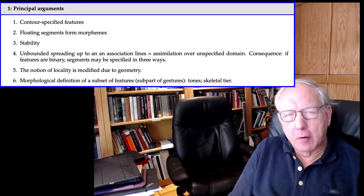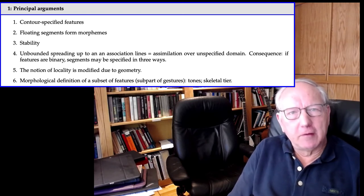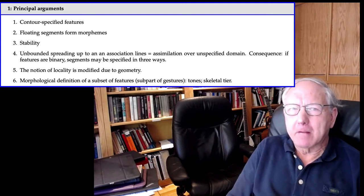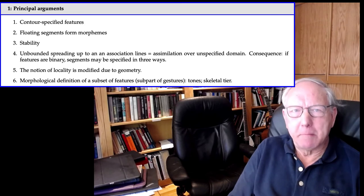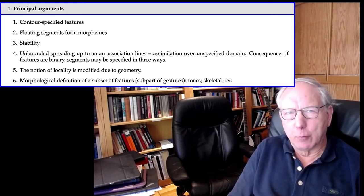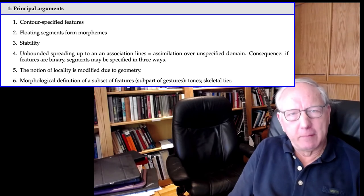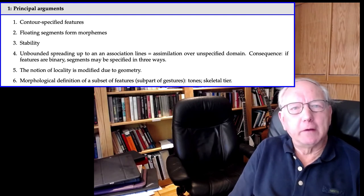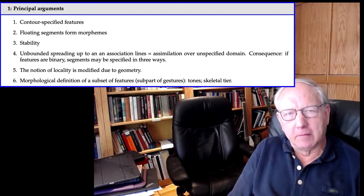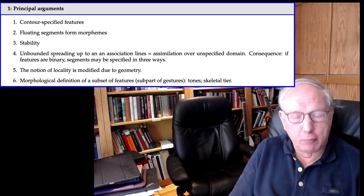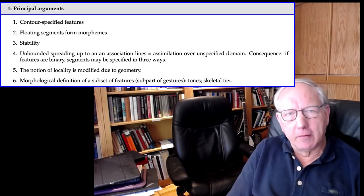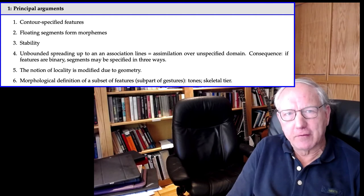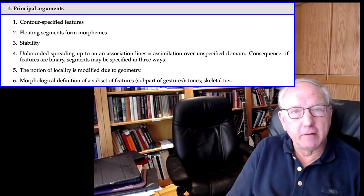The second argument derives from the discovery of floating tones. Some European Bantuists like Meeussen and Voorhoeve had done a great deal of work establishing that there were morphemes in Bantu languages that were solely tones — tones and nothing but. The notion of a floating tone arose out of this work. In autosegmental terms, this is very natural: it's simply a segment on the tonal tier and nothing but that.